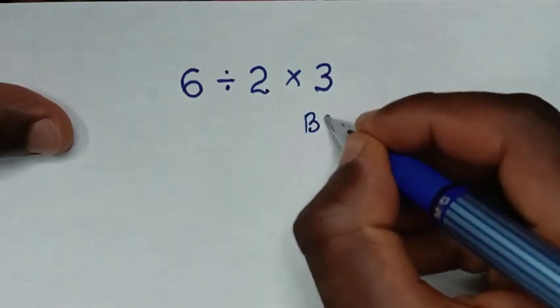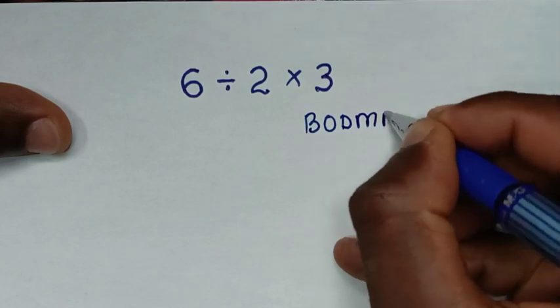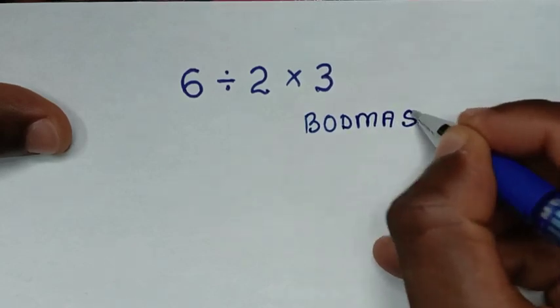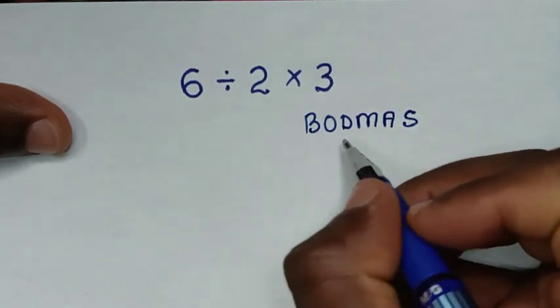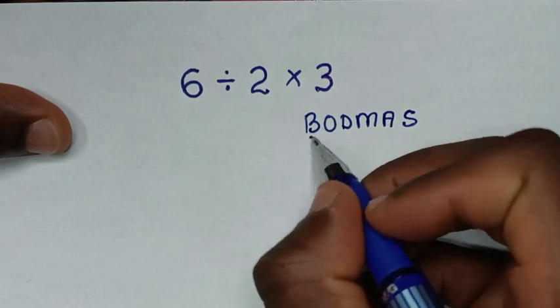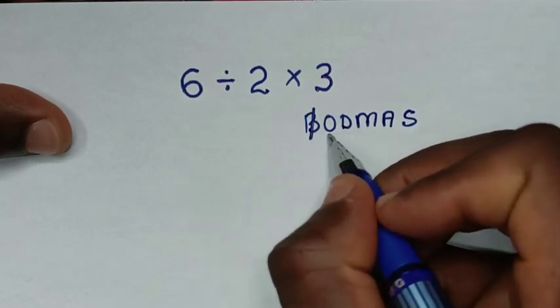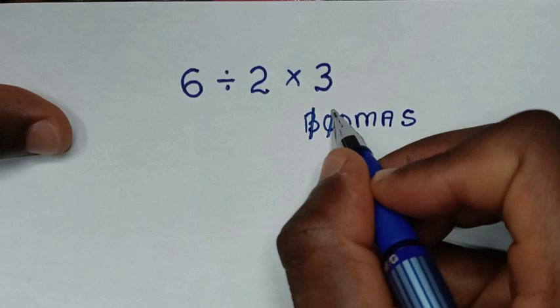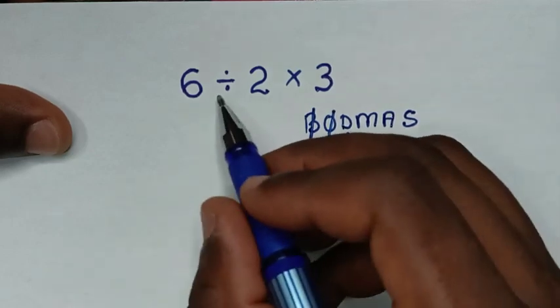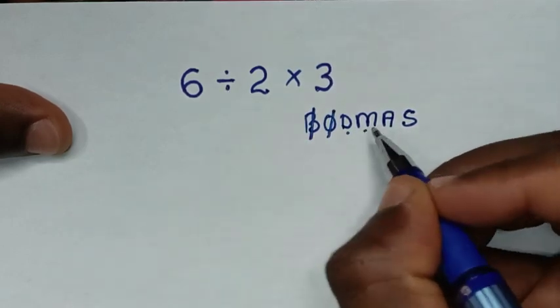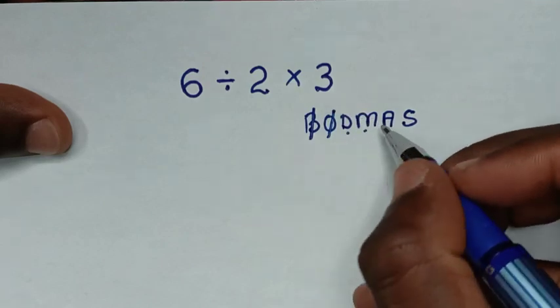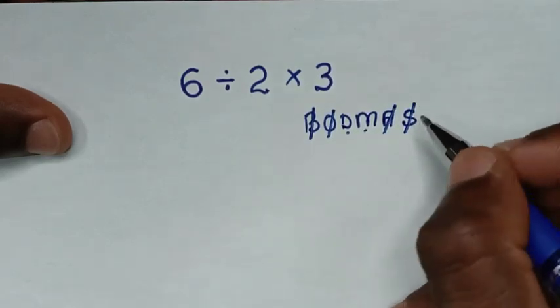BODMAS stands for: B - brackets (we don't have brackets in this problem), O - orders or exponents (we don't have those either), D - division (we have this division here), M - multiplication (we have this multiplication here), but we don't have addition and subtraction.